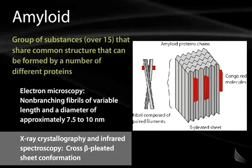X-ray crystallography and infrared spectroscopy have also been useful in the analysis of amyloid, demonstrating the creation of what we term a cross-beta pleated sheet conformation, as shown in the accompanying picture, where a series of paired filaments congregate together to form amyloid protein chains. This beta-pleated sheet structure is where the Congo red stain congregates and gives the apple green birefringence.